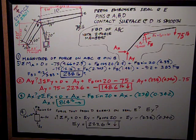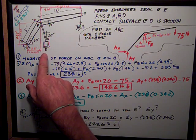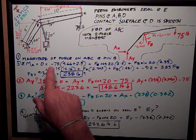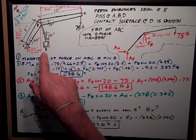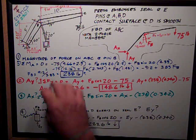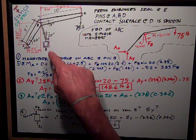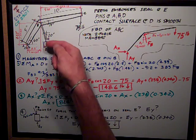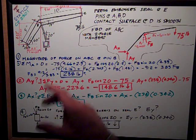This was page number three. It involved a press that embosses a seal at point E. And we have pins at A, B, and D that allow those members to rotate. And it's noted that the contact surface at D is smooth. It means these sidewalls of the thing that the little piston thing goes up and down in.